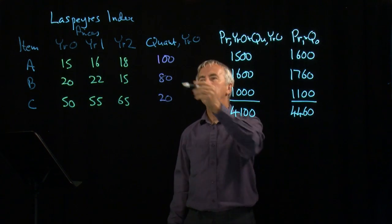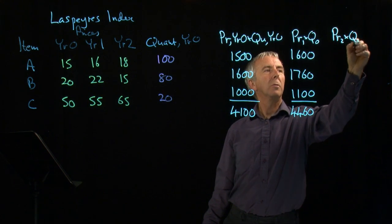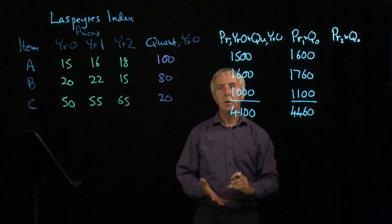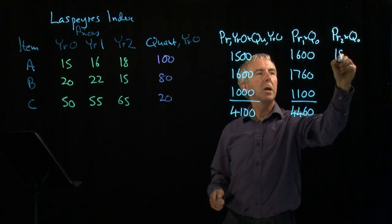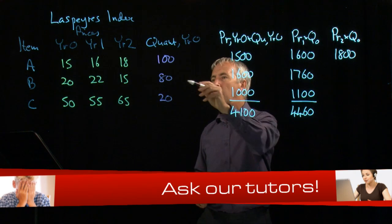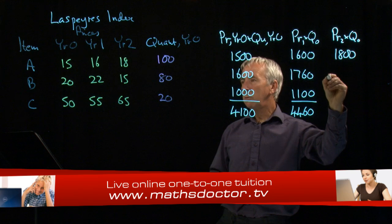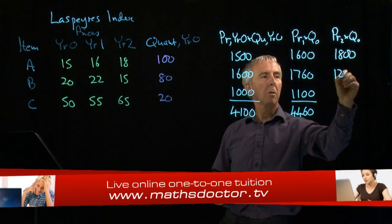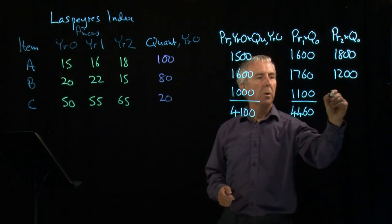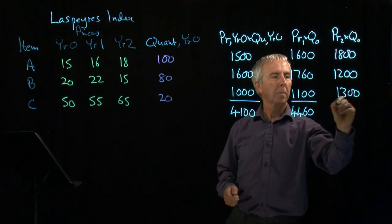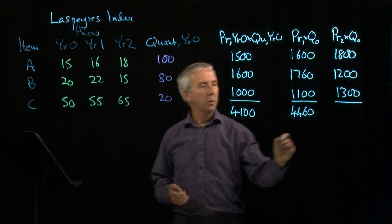Then we look at what happens in year two — the prices in year two times the same quantities, assuming no change. So we get 100 times 18, then 80 times 15 which is 1,200, and 20 times 65 which is 1,300. We add all those up and we get 4,300.